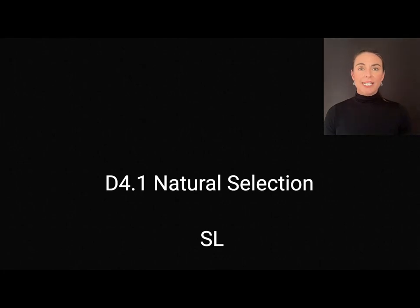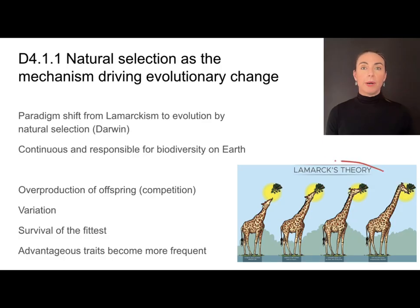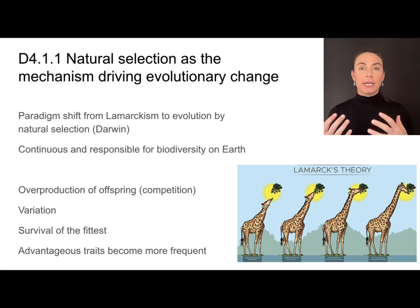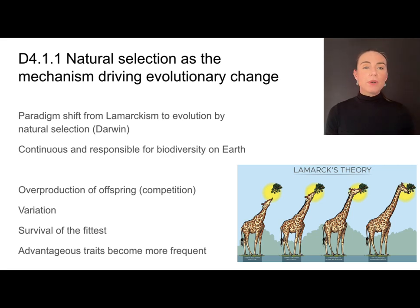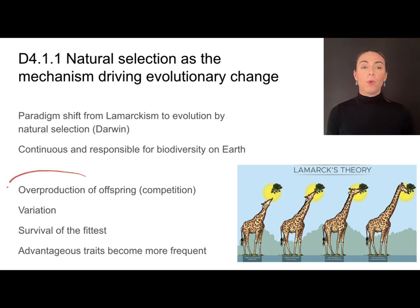This is the video for the standard level content on D4.1, natural selection. In previous topics, you may have heard of Lamarckism, or the passing down of acquired traits. The thought of evolution by natural selection as proposed by Darwin represents a huge shift in our paradigm for biology and our way of thinking about how and why things change. Natural selection is continuous — it's always happening and it's responsible for the biodiversity on Earth. In this video, we'll be going more into depth about the four requirements for natural selection to take place.